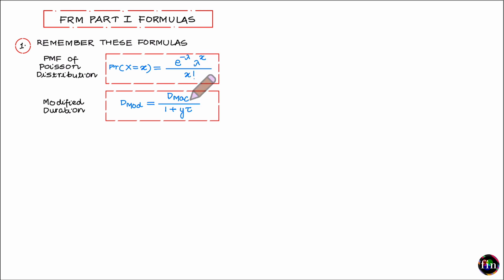Then another check that you can do on any given formula is to do some kind of a simple dimension analysis. For example in this formula in the denominator you have 1 plus y times tau. If you had just written 1 plus y then something is wrong.